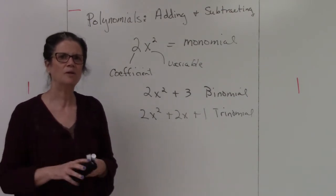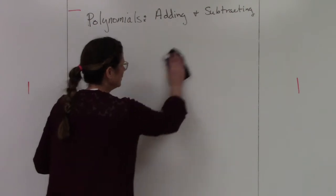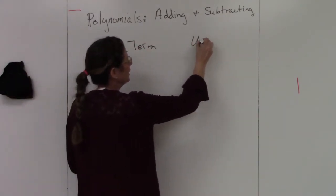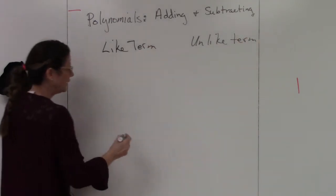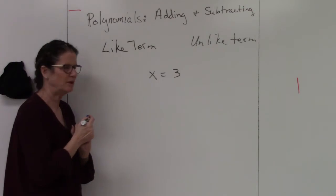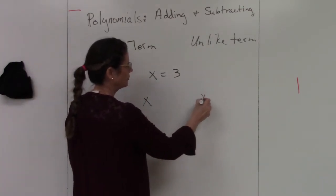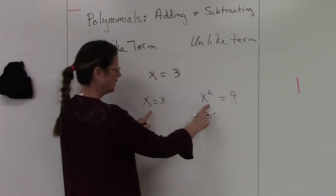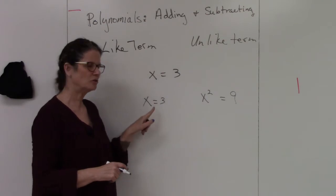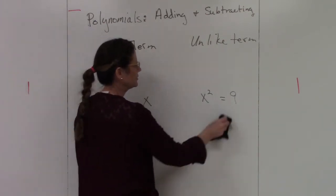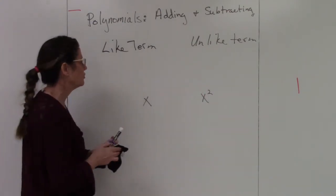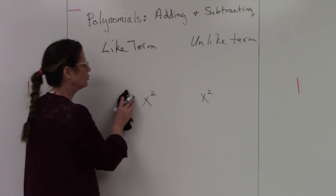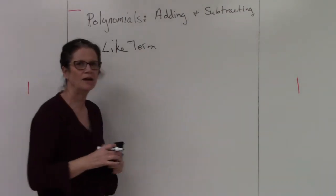When adding polynomials, you need to understand what a like term is versus an unlike term. If x equals three, then x equals three but x squared equals nine — they're not the same value, so those are unlike terms. The variable is the same but the exponent is different. To have a like term, you need the same variable and the same exponent. You can only add and subtract like terms.